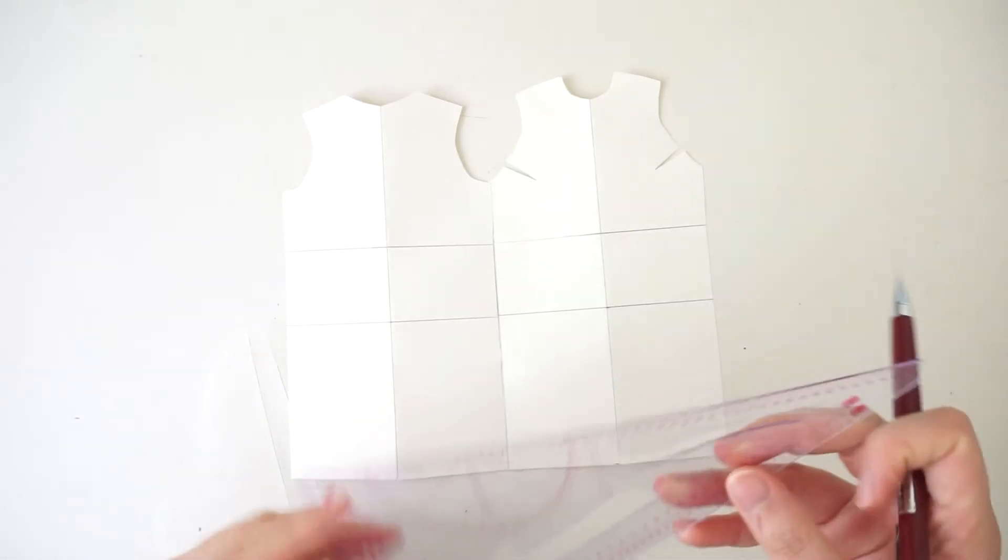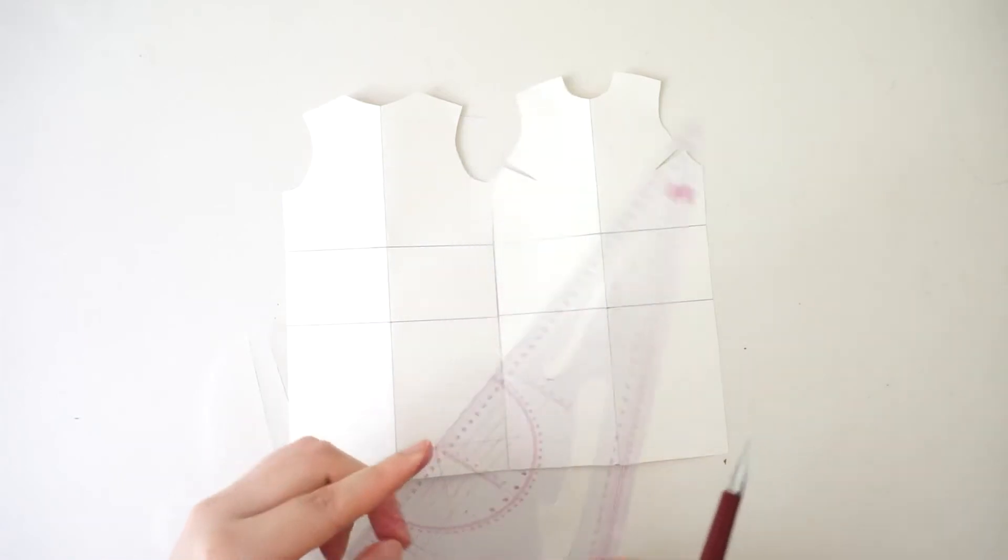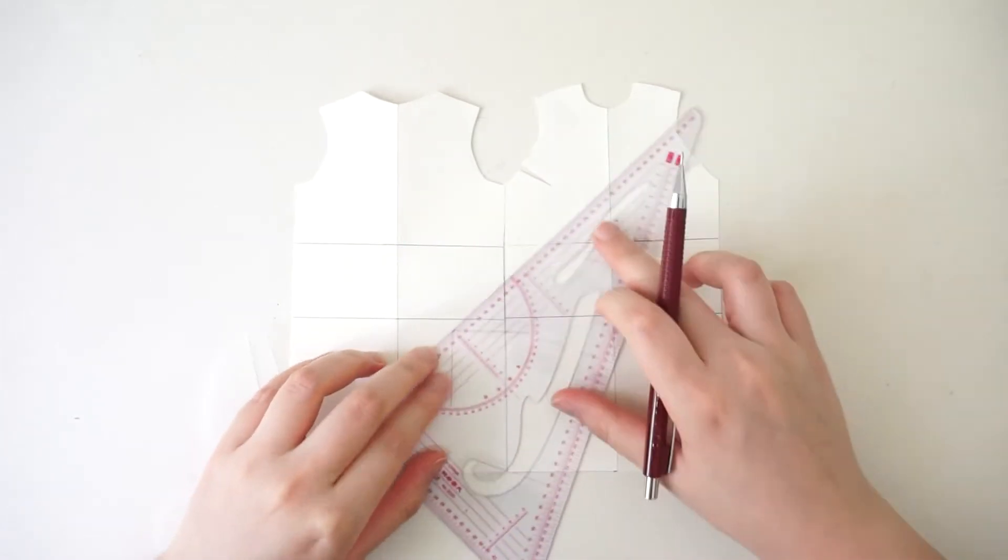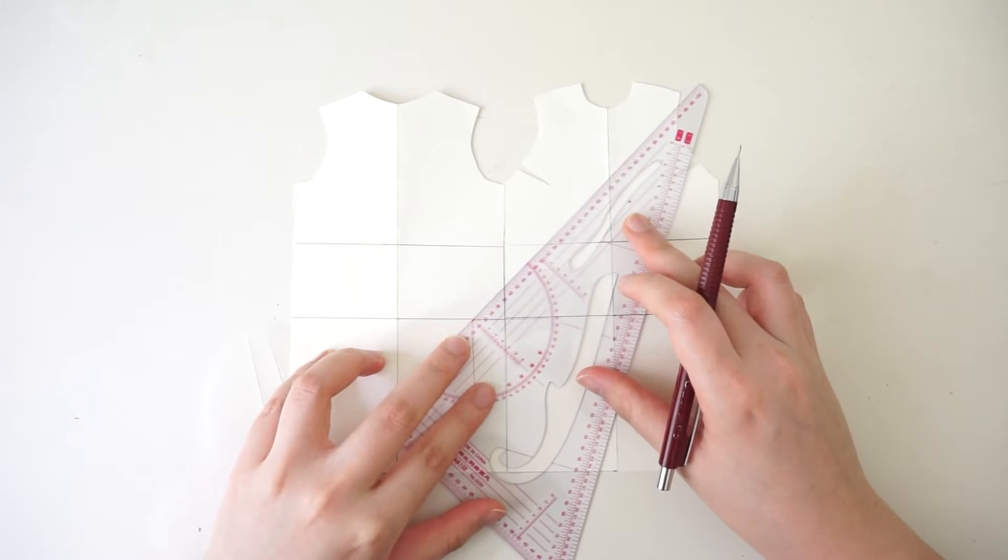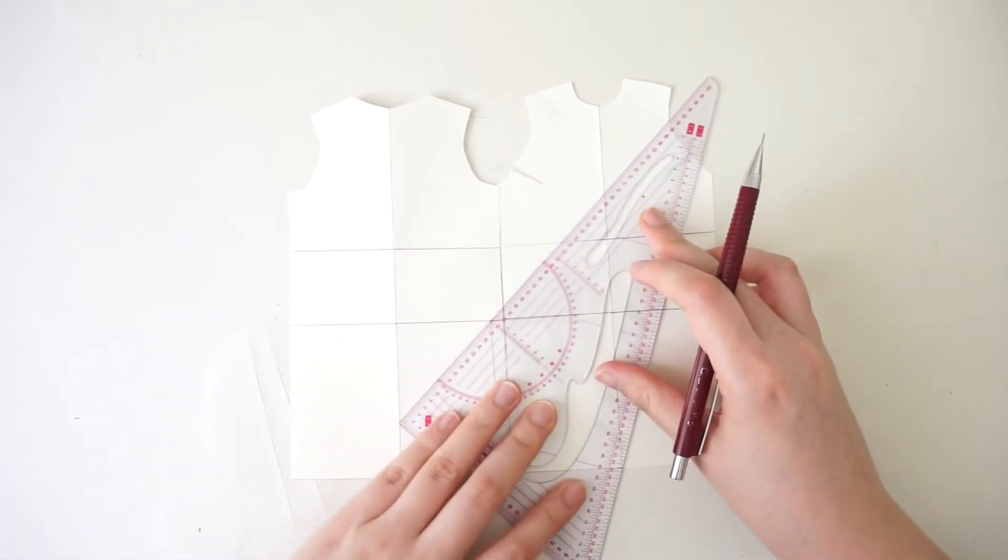The pattern drafting is relatively easy. First, you will need a basic bodice pattern, just take a bodice that fits you, elongate it to your desired dress length and tape the front and back together on the side seam. Make sure you mark all the standard lines like the waist, hip and bust line.